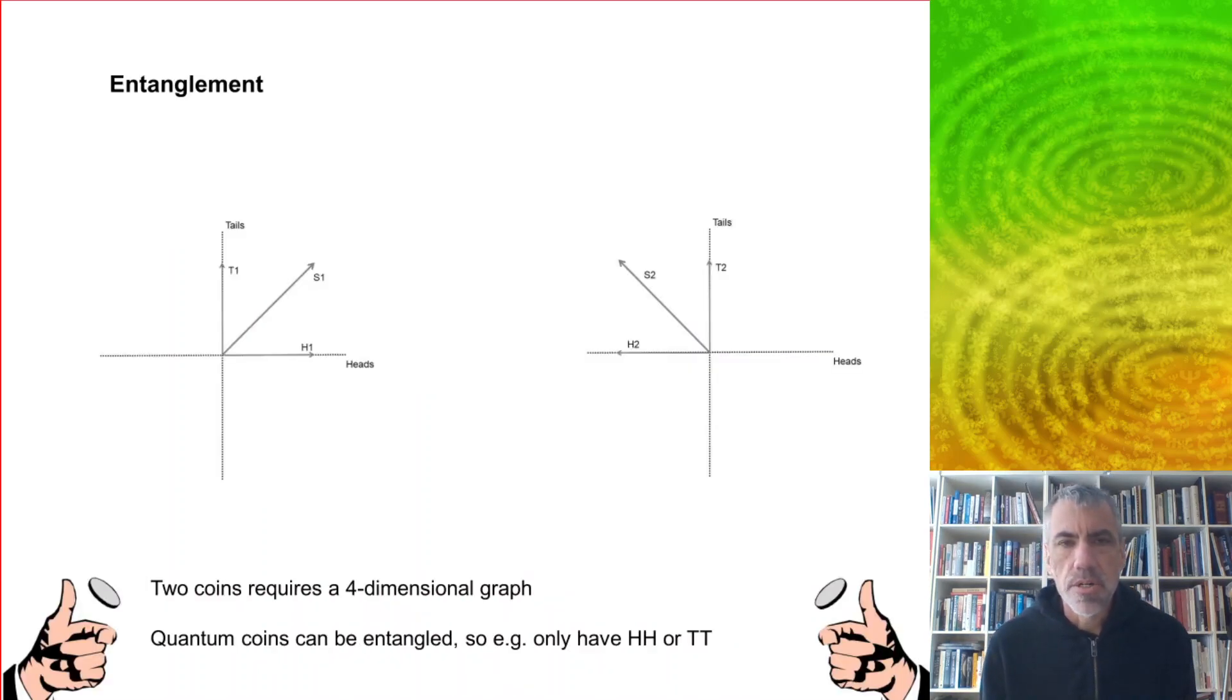And we can also think of a more complicated system. So imagine that we had two coins. Now there's four different things that we need to keep track of. There's heads and tails for one coin, heads and tails for another coin. That's four dimensions. Obviously not easy to draw. But quantum coins can be entangled. So, for example, you might have the only possibilities is heads, heads, or tails, tails.